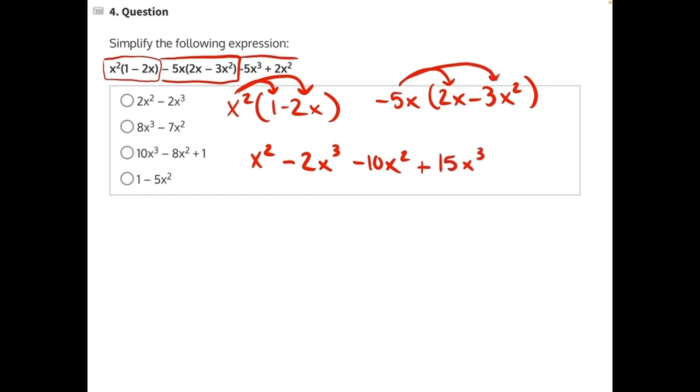And then finally, we add on our last two terms, minus 5x cubed plus 2x squared. Now, we need to look for like terms and combine them to simplify. It may be easiest if you rearrange these numbers in order of descending power.